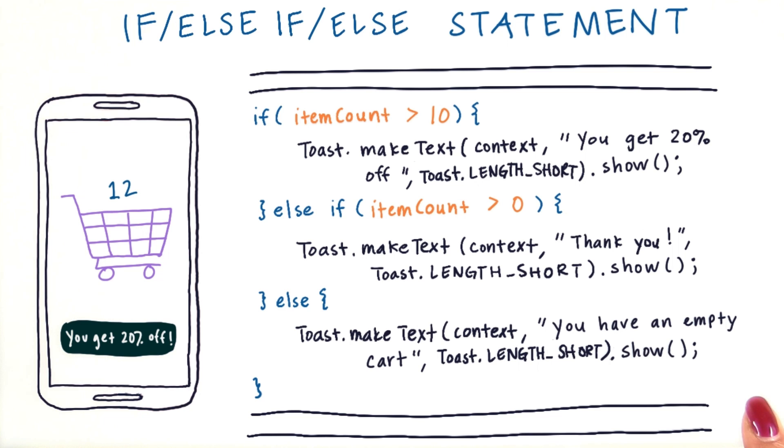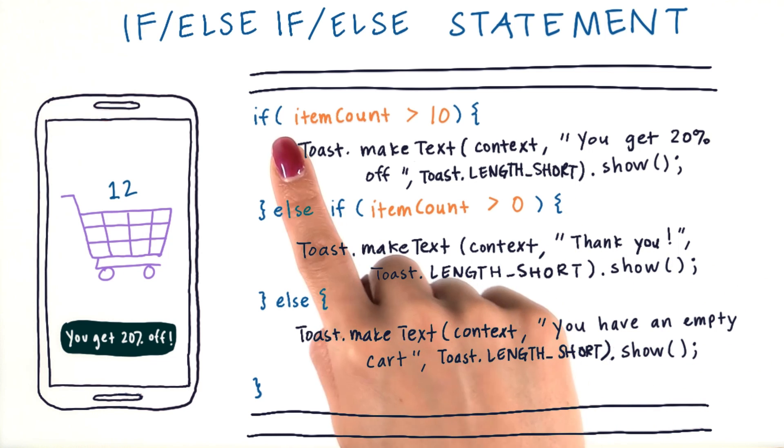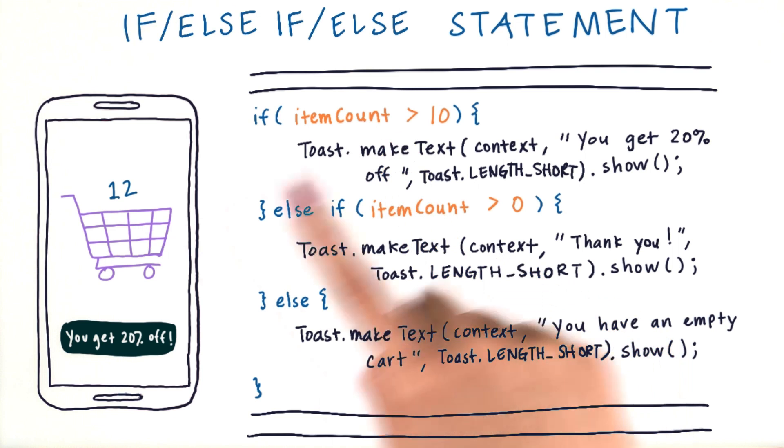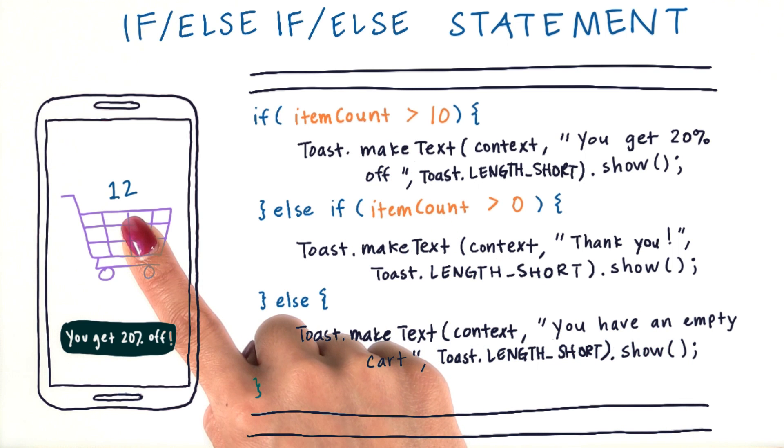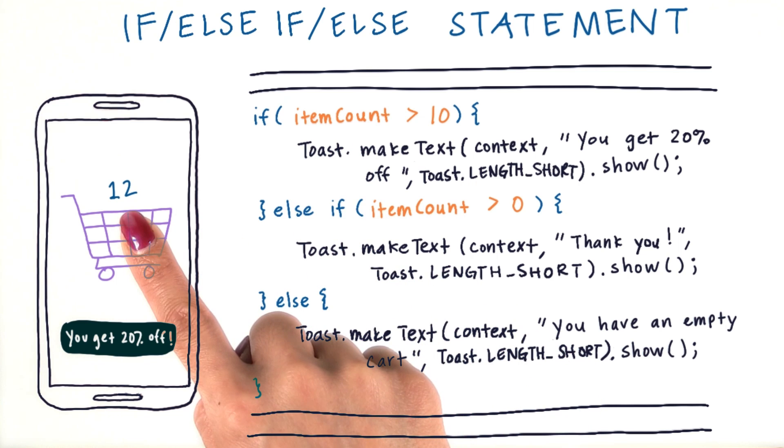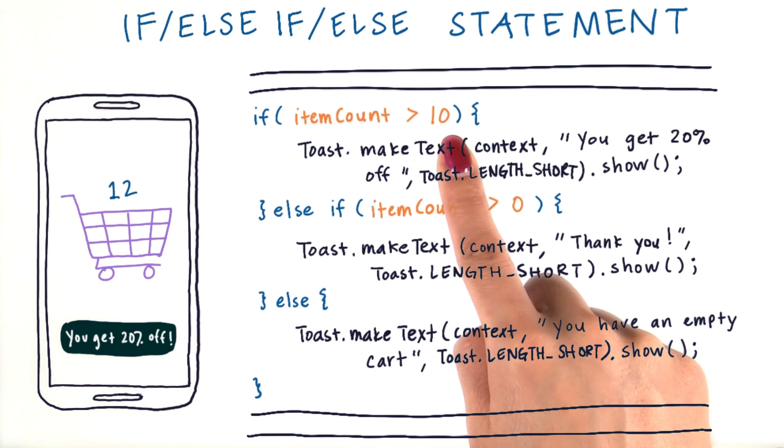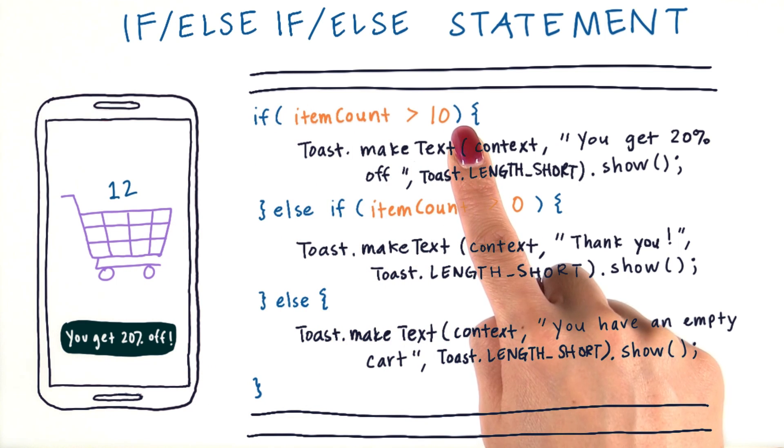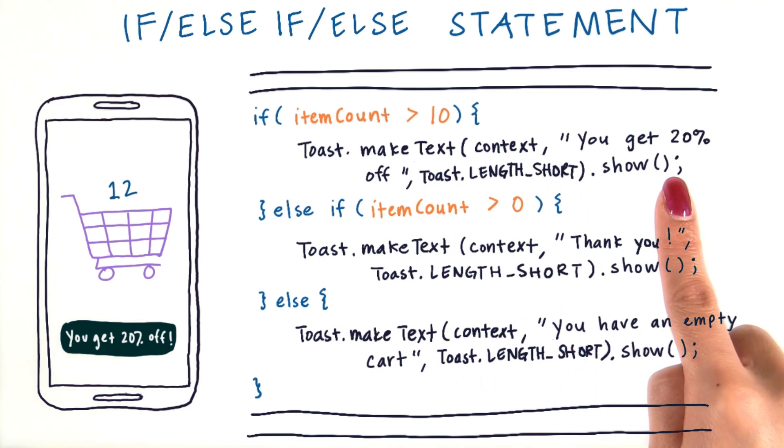In our code here, we can fall into one of three possible cases, depending on the value of the integer variable item count. Item count just represents the number of items in the shopping cart in our app. Let's start with the first condition. If item count is 12, then 12 is greater than 10, so that is true. And then we would execute the lines of code within this block of code. We would create a toast message that says, you get 20% off and show it at the bottom of the screen.